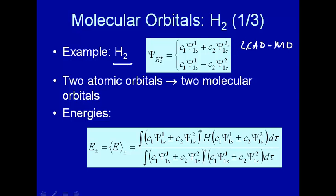This will lead to bonding and anti-bonding orbitals, just like we had for H2+. In general, if you have two atomic orbitals, you'll form two molecular orbitals. If you combine three atomic orbitals, you'll form three molecular orbitals, and so on.